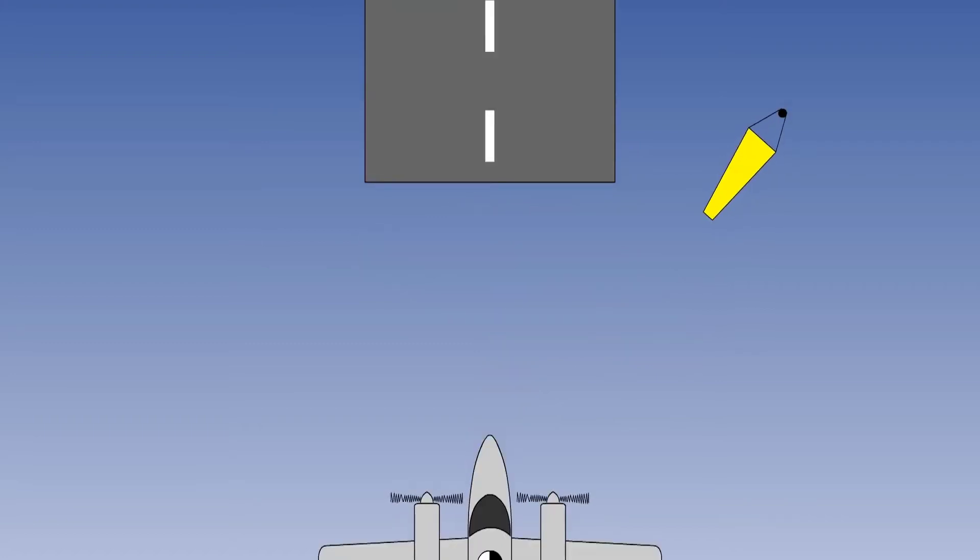The second use of the rudder we will look at is take-off or landing with a crosswind. The landing approach is illustrated with a right crosswind. If you position the aircraft on the extended runway centreline with a right crosswind, the aircraft will drift to the left.